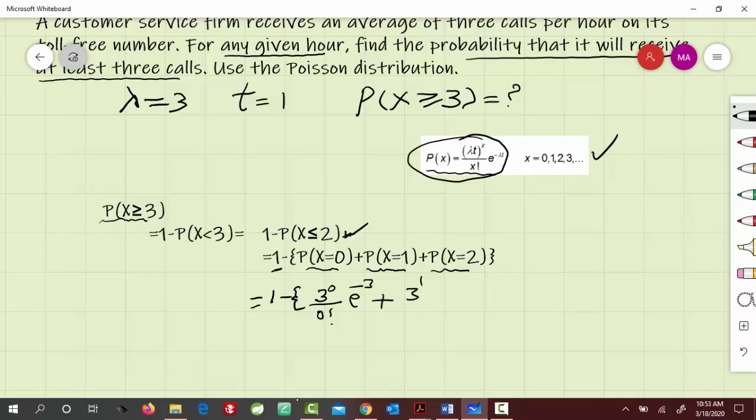3 to the 1 divided by 1 factorial, times e to the minus 3, plus 3 squared divided by 2 factorial, times e to the minus 3.